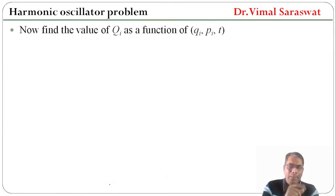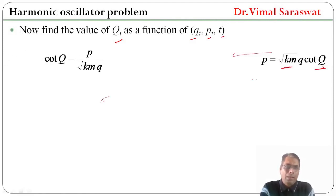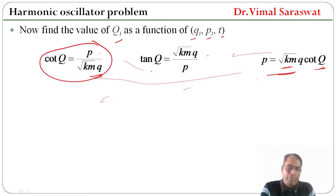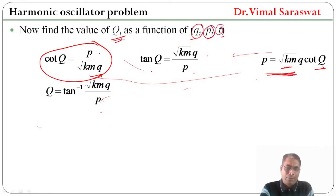Now find the value of capital Q_i as a function of small q_i, small p_i, and t. Since p equals root(km) q cot(Q), we get cot(Q) equals p divided by root(km) q. Taking the reciprocal: tan(Q) equals root(km) q divided by p. Therefore, capital Q equals tan⁻¹(root(km) q / p).